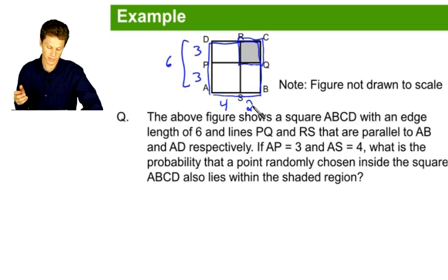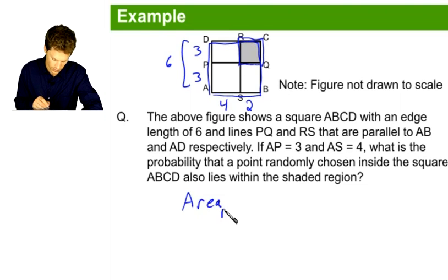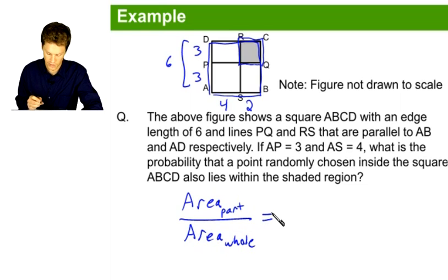This is important information because now we've figured out the dimensions of this shaded rectangle here, which means the area of the part is going to be the area of that shaded rectangle, which is very easy to calculate. It's just going to be 3 times 2. Of course, that's the formula for the area of a rectangle base times height.